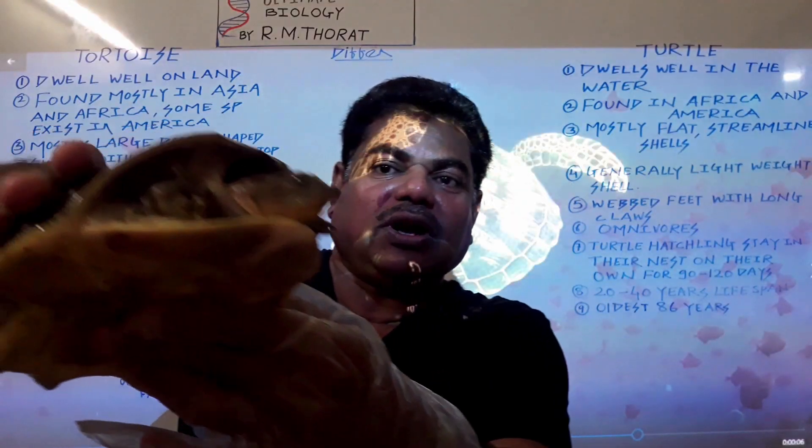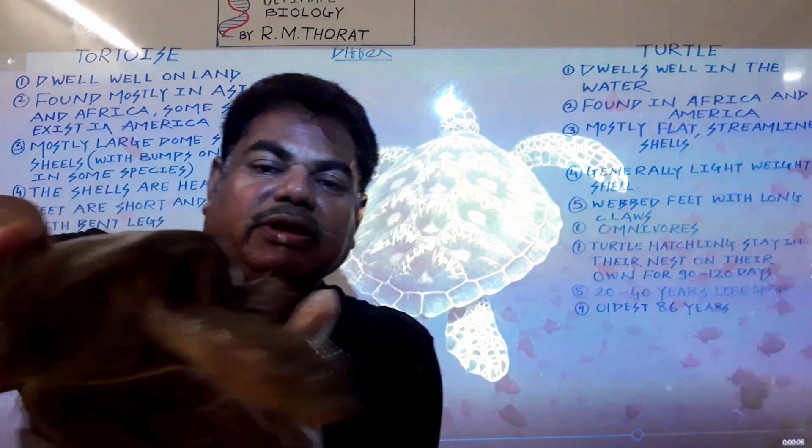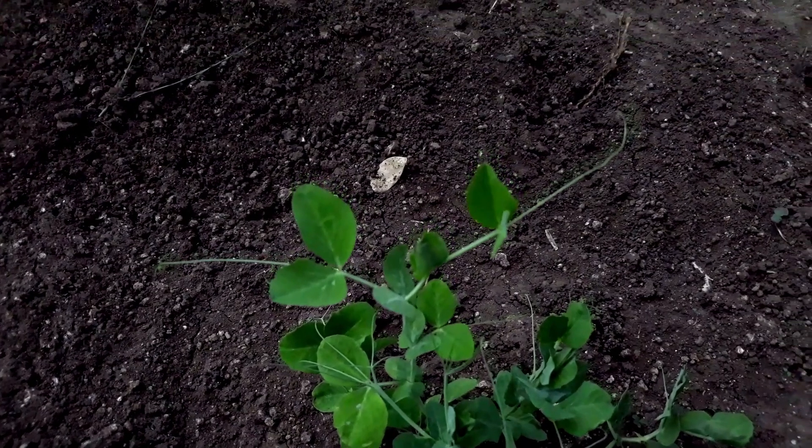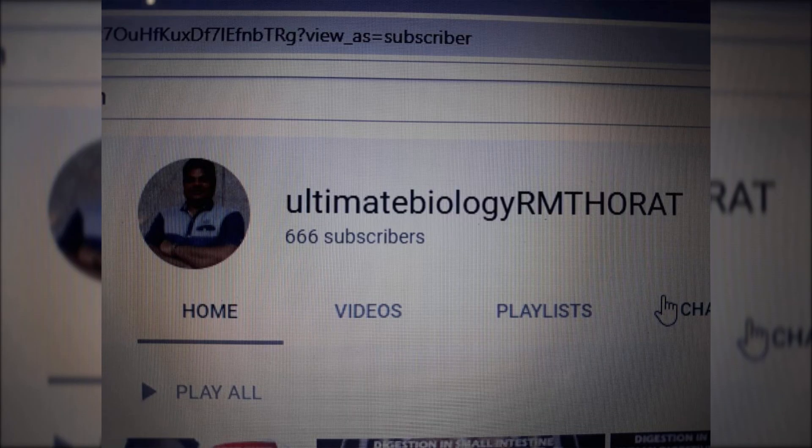This one is a tortoise. What is the botanical name of this tree plant? It is called Matar or it is called Marathi. What is the botanical name of this plant? Baisam satayvam. Baisam satayvam is the name of...